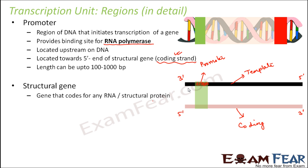Next is the structural gene. These are the genes that code for any RNA or structural protein. All the genes located in the middle portion are structural genes, and they are going to code for RNA. The base sequence in these genes defines the base sequence on the RNA strand.